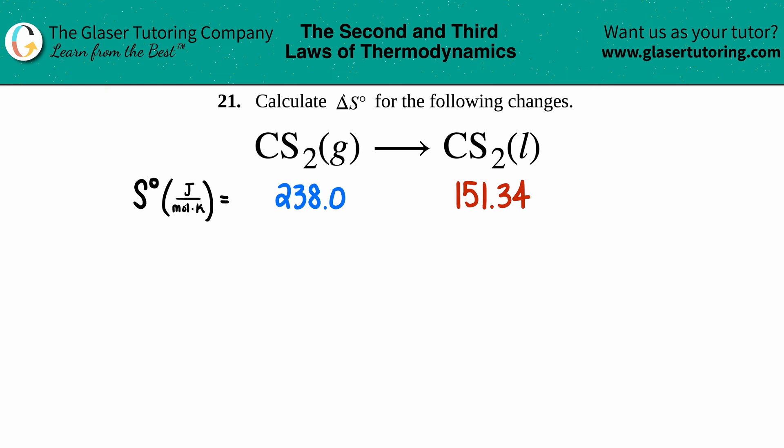Number 21: calculate the delta S for the following changes—CS2 gas goes to CS2 liquid. We're trying to find a delta S value. Delta S is talking about a change in entropy, so we're looking for a change in entropy, randomness, disorder. Anytime that you see an S value, that's entropy.